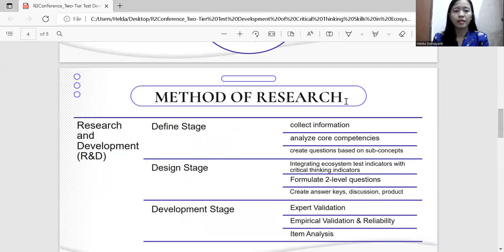Method of research. The research method uses research and development R&D with a 4D development model: define, design, development, and dissemination. But this research only reaches the development stage.